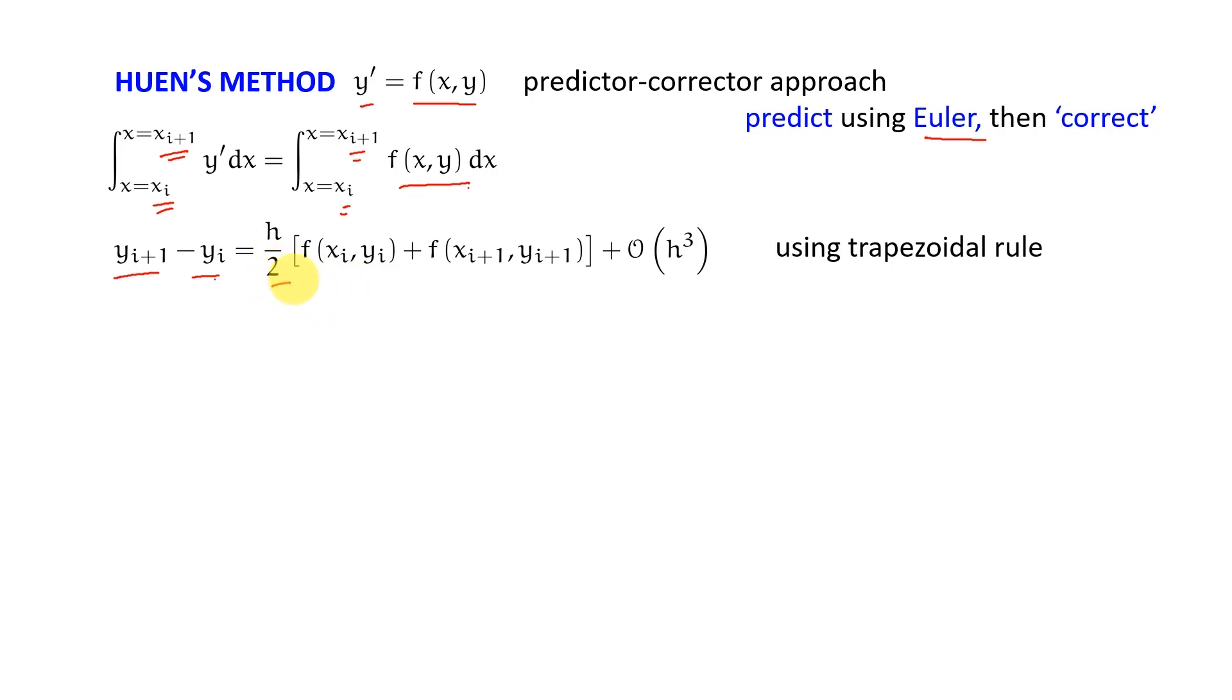I'll get h/2[f(xi, yi) + f(xi+1, yi+1)]. Now unfortunately this f(xi+1, yi+1) is unknown. We don't know the yi+1 yet and that is the problem.